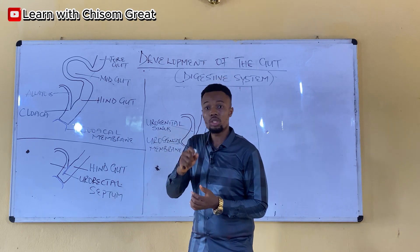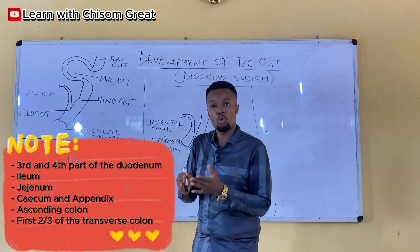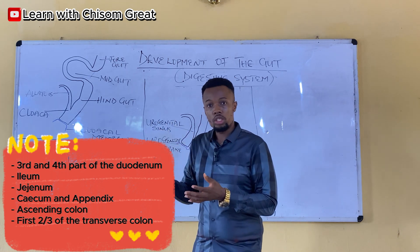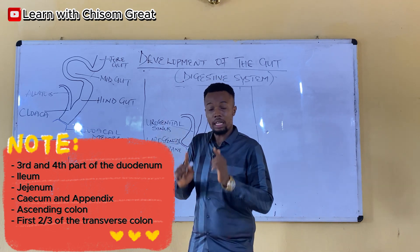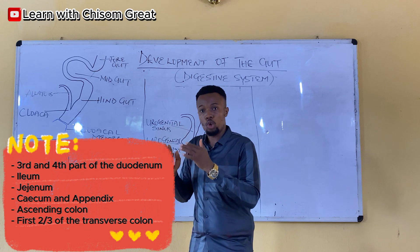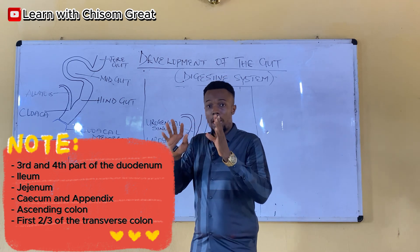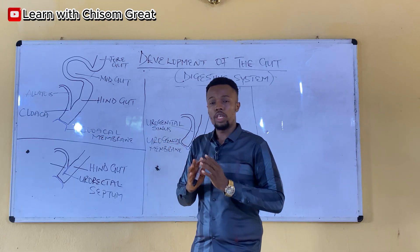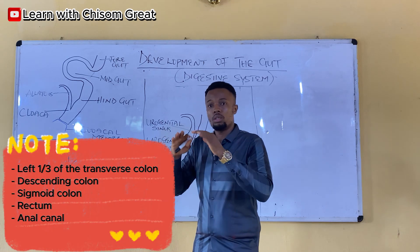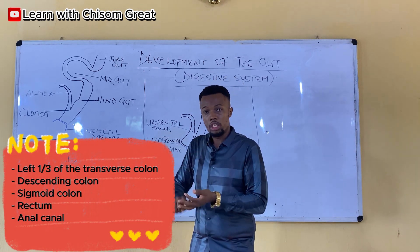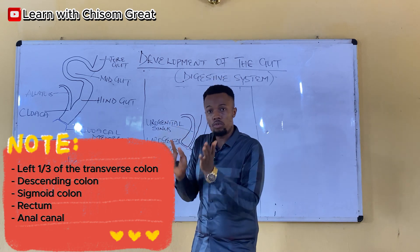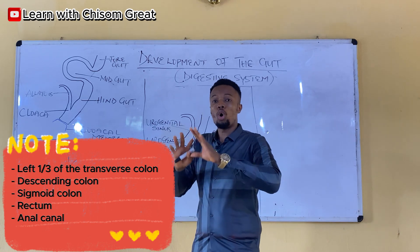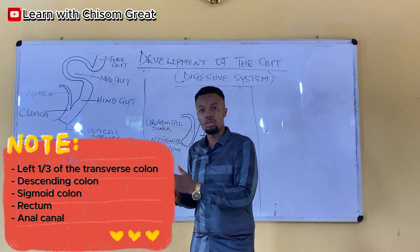The midgut gave rise to the third and fourth part of the duodenum, the jejunum, the ileum, the cecum, the appendix, the ascending colon, and the right two-thirds of the transverse colon. The hindgut gave rise to the left one-third of the transverse colon, the descending colon, the sigmoid colon, the rectum, the anal canal, and also the urogenital system.